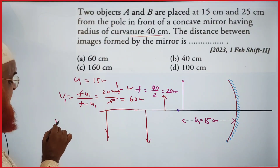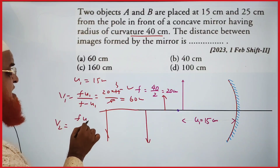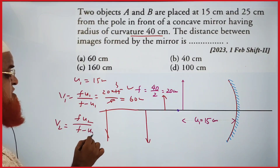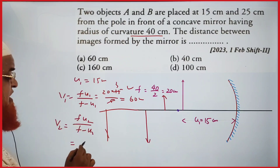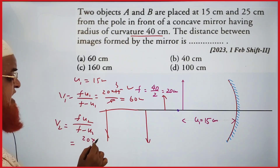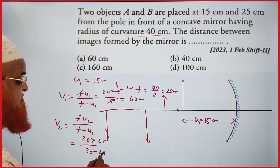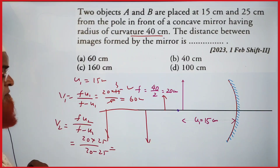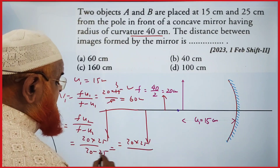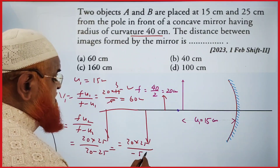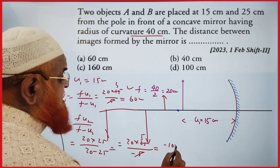Now find the second image distance v₂. Using v₂ = f·u₂ / (f − u₂) = 20 × 25 / (20 − 25) = 500 / (−5) = −100 centimeters.